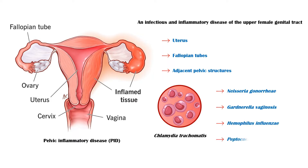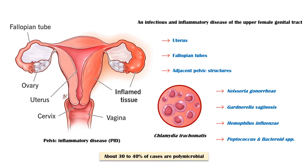Additional causative organisms include anaerobes such as Peptococcus and Bacteroides species. About 30-40% of cases of pelvic inflammatory disease are polymicrobial, meaning that multiple organisms are involved.